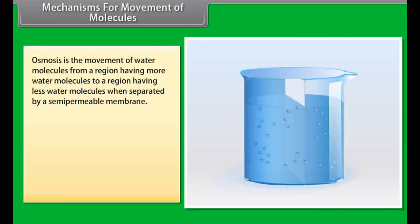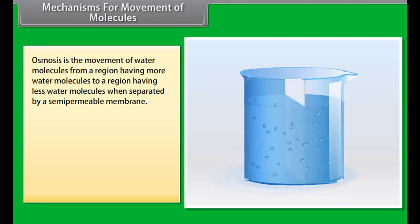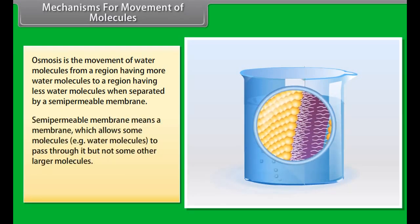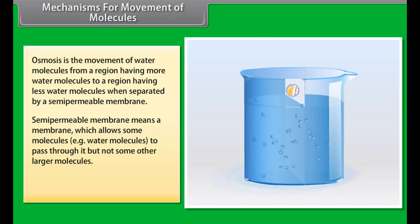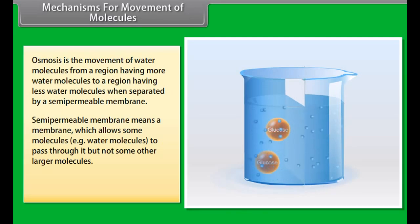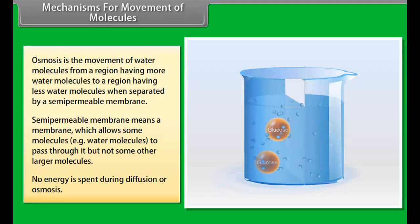Osmosis is the movement of water molecules from a region having more water molecules to a region having fewer water molecules, when separated by a semi-permeable membrane. A semi-permeable membrane is a membrane which allows some molecules, such as water molecules, to pass through it but not larger molecules. No energy is spent during diffusion or osmosis.